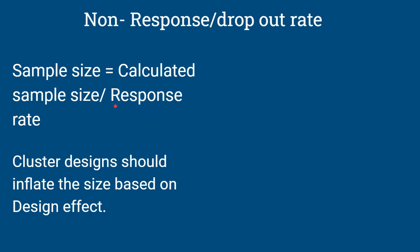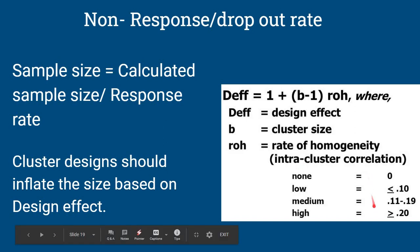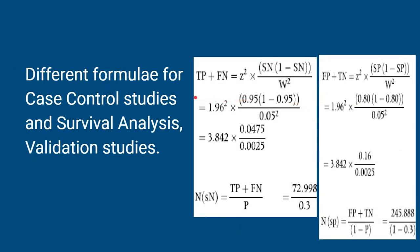Remember, we are dividing by the response rate, not the non-response rate, to yield the required sample size. The third adjustment is for cluster designs: we should inflate the sample size based on the design effect. Design effect = 1 + (B - 1) × ROH, where B is the cluster size and ROH is rate of homogeneity, otherwise called intra-cluster correlation. We must also remember that sample size calculation for case control studies, survival analysis, and validation studies are going to be different. For validation or diagnostic studies, a specific formula applies.